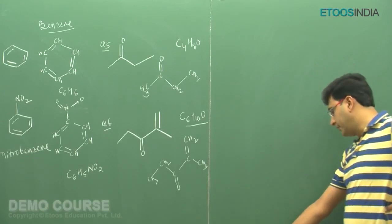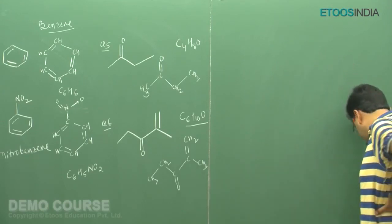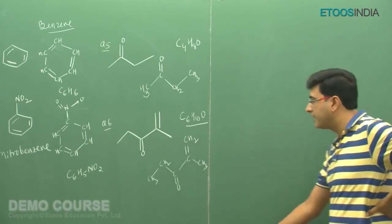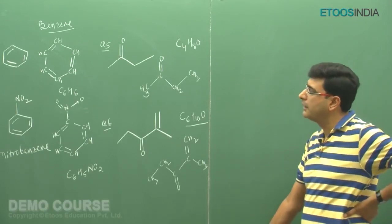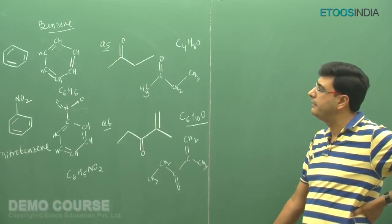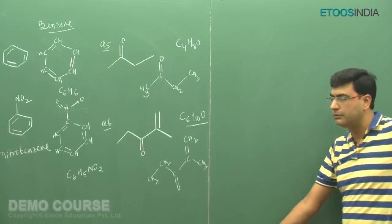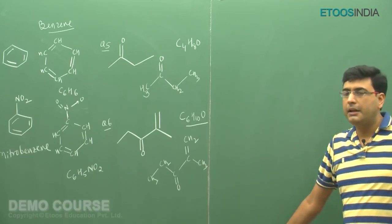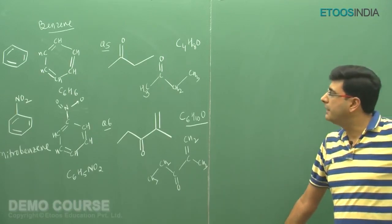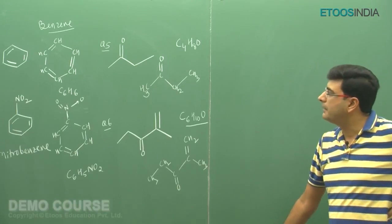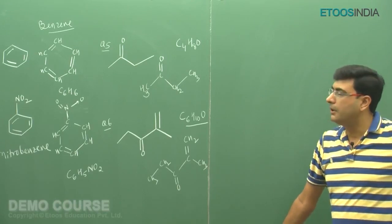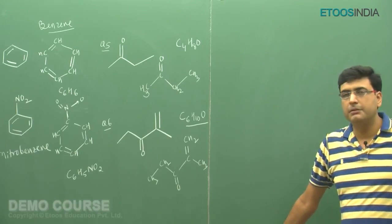So this is the bond line notation, which is very convenient in many cases. Given a bond line notation, you can convert it into the structural formula to show connectivity between atoms, and also express the molecule as a molecular formula.